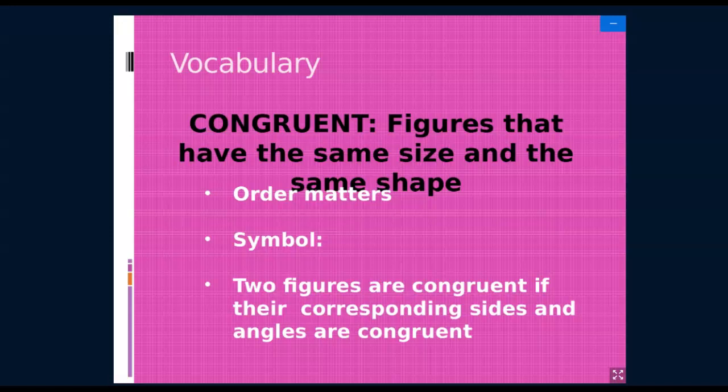So congruent - what does congruent mean? Congruent means that figures have the same size and the same shape. When writing the symbol for congruent, it's an equal sign because the shapes are equal, and then we put the tilde symbol on top because they're equal in all ways. We say the two figures are congruent if their corresponding sides and angles are congruent.